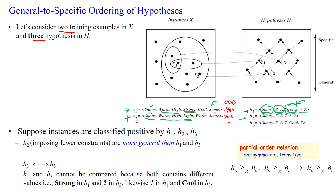Then we select the next hypothesis H2. We check the attribute values of X1 and X2 with H2. First, this is sunny — for training example X1, here it is also sunny — then all remaining are quotient symbols, meaning it will accept any value of those five attributes. So H2 satisfies X1. Then comparing H2 with X2: first attribute value is sunny, here also it is sunny, and remaining all attributes are quotient symbols. So H2 is satisfying both X1 and X2.